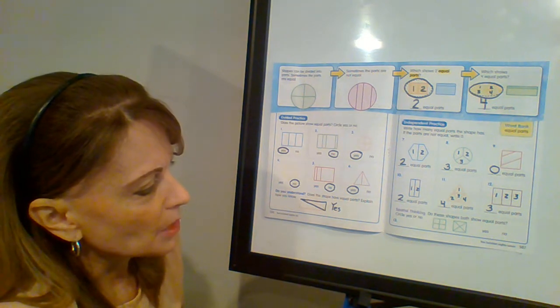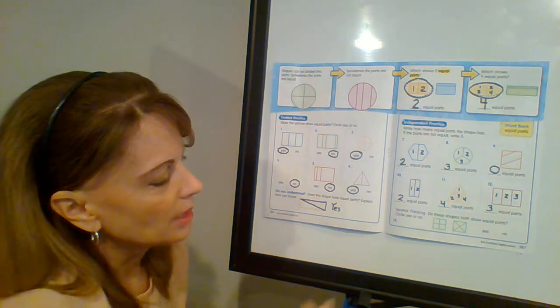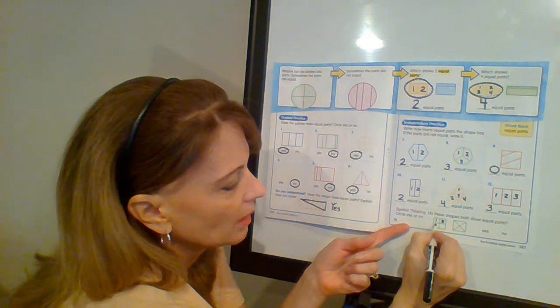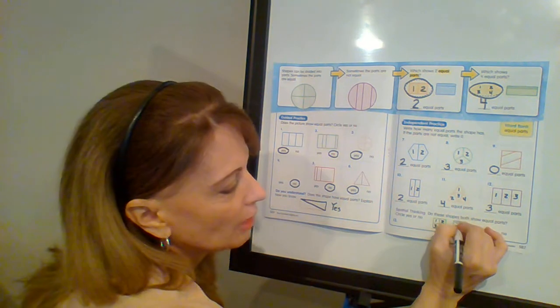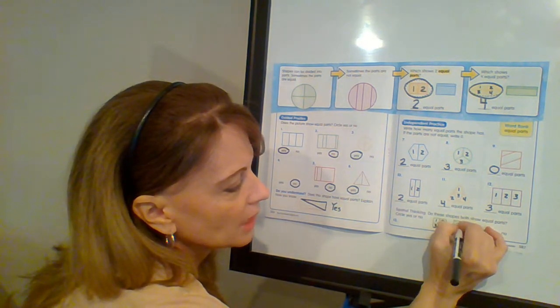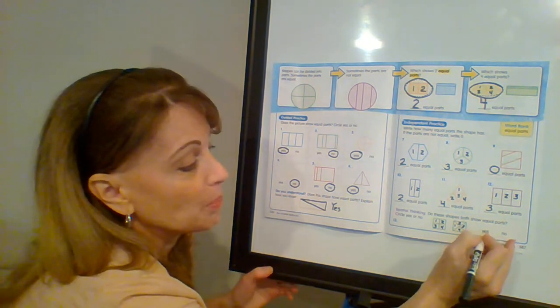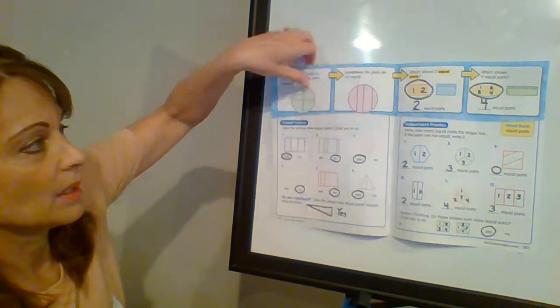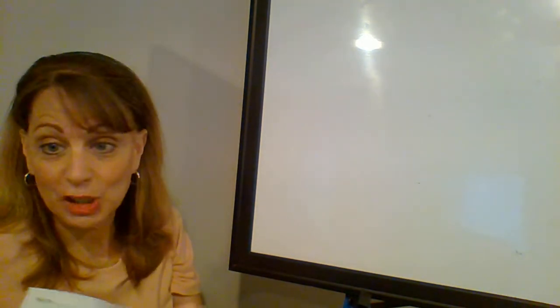Do these shapes both show equal parts? Yes or no? So let's look at each one. Are all four of these equal? Yes. Are all four of these equal? Yes. Are all four of these equal? They both show equal parts. Circle yes. Remember, if at any time I get ahead of you, feel free to pause the video and catch up.